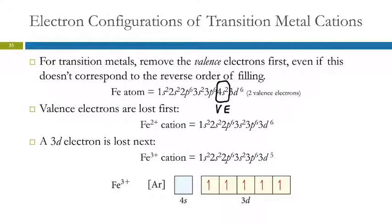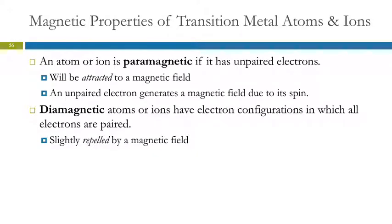It's always the valence electrons that are lost first. A paramagnetic atom or ion has some unpaired electrons, which causes it to interact with a magnetic field. That unpaired electron generates a small magnetic field due to its spin. A diamagnetic atom or ion has all electrons paired up and is not attracted to a magnetic field — in fact, it's slightly repelled.